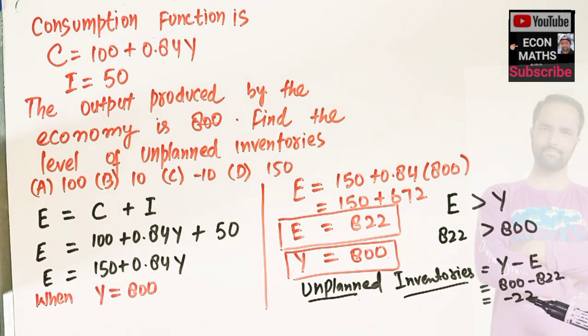And how do we interpret it? Simply, firms are selling more output than they are producing. So there is unplanned decrease in inventory by 22 units.